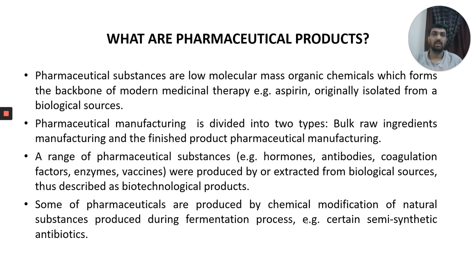If you want to divide pharmaceutical manufacturing, you could classify it into two types: one is the basic bulk raw material manufacturing facilities, and the other is actually the pharmaceutical industry involved in finished products or the formulation of different pharmaceutical dosage forms. These products are manufactured using raw material from the bulk manufacturing industry and prepared as dosage forms for human, veterinary, or any other consumption.